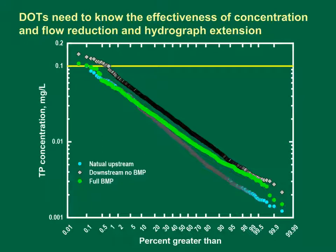This is a probability plot with total phosphorus on a log scale on the vertical axis and the percentage of event mean concentrations that exceed a given concentration on a probability scale on the horizontal axis. This graph shows the risk of exceeding a 0.1 mg per liter in-stream criterion upstream of a highway site and downstream of the outfall with and without BMP treatment. In this hypothetical example, a simple grassy swale was able to meet the water quality criterion because the swale was able to reduce high inflow concentrations, reduce flows, and extend the discharge hydrograph. Although swales do not do a great job reducing low phosphorus concentrations and some BMP outflow concentrations can exceed inflow concentrations, the combined high concentration reductions and flow reductions can mitigate adverse effects of runoff on receiving waters.